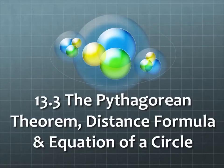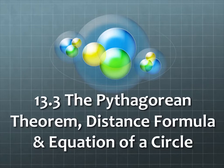Today we're going to start with section 13.3. This is the Pythagorean Theorem, Distance Formula, and Equation of a Circle. It might feel like that title is just merging together a bunch of objects, but these objects are put together on purpose because they are very interrelated. We'll show you how that is as we go along.